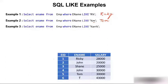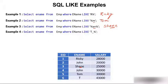Tom is a name ending with 'M', so Tom is the answer. For WHERE ename LIKE '%an%', we look for 'an' anywhere in the name — Shane contains 'an', so Shane is the answer. For WHERE ename LIKE 'T_', the name must start with 'T' and have one more character — so 'T' alone is excluded and Tom is the answer.